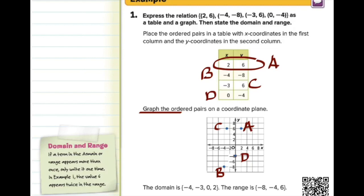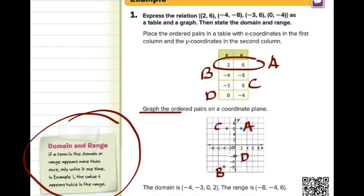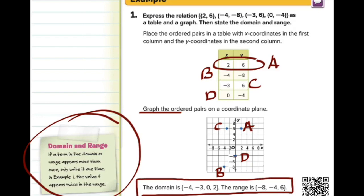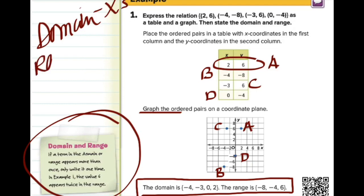On the side note about domain and range: if a term in the domain or range appears more than once, only write it one time. In example 1, the value 6 appears twice in the range. The domain is {−4, −3, 0, 2} — those are all the x-values. The range is {−8, −4, 6} — the y-values. Because 6 appeared twice in the y-column, we only write it once.